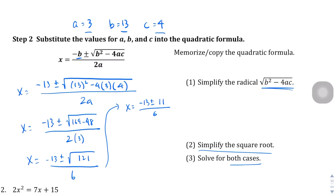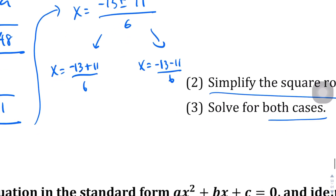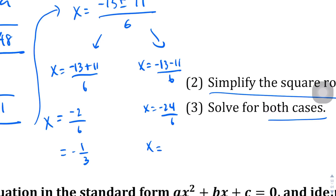Now we solve for both cases. For the plus version: x equals negative 13 plus 11 over 6, which is negative 2 over 6, or negative one third. For the minus version: x equals negative 13 minus 11 over 6, which is negative 24 over 6, or negative 4. So our two answers are x equals negative one third and x equals negative 4.